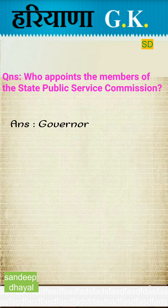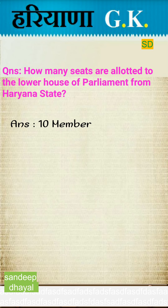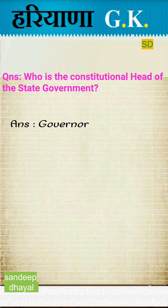Who appoints the members of the State Public Service Commission? Answer: Governor. How many seats are allocated to the members of Rajya Sabha from Haryana state? Answer: Five members. How many seats are allocated to the lower house of Parliament from Haryana state? Answer: 10 members — these are Lok Sabha members. Who is the constitutional head of the state government? Answer: Governor.